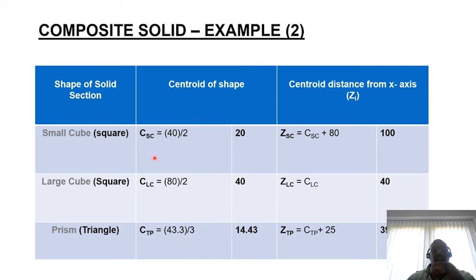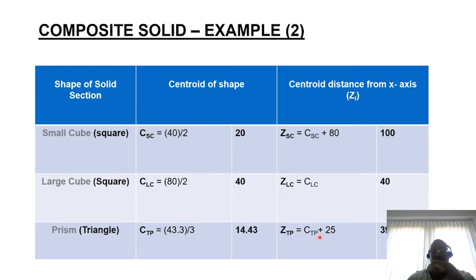Using the standard formulas: for a square the centroid is side divided by 2; for a cuboid, length divided by 2; for a triangle, one-third of the height. The distance from the x-axis to the small cube centroid is 80 plus its centroid position; z_LC equals 40mm from the base; and z_TP equals its individual centroid position plus 25mm, since you must add 25 to reach the exact centroid position relative to the x-axis.